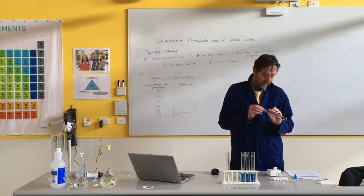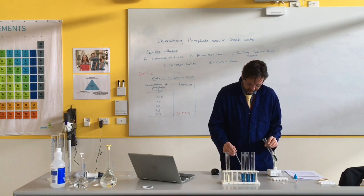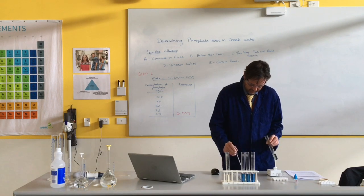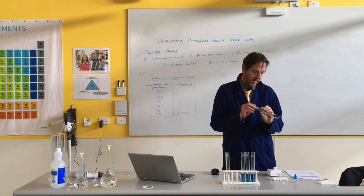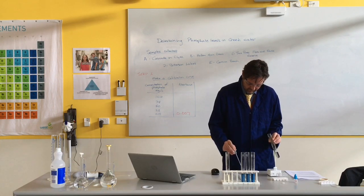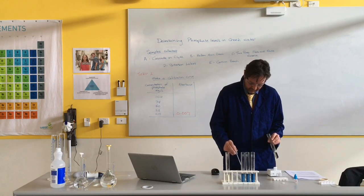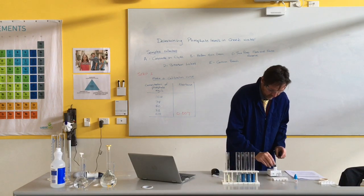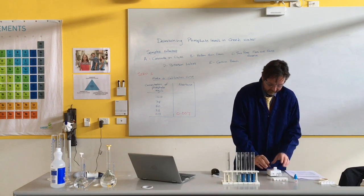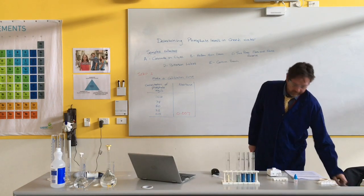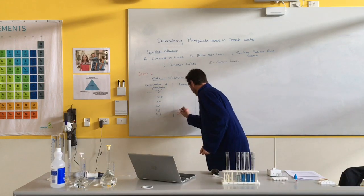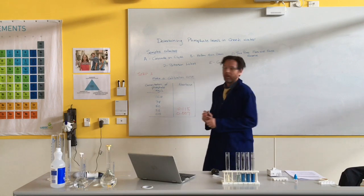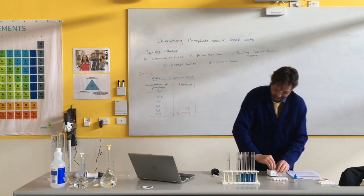Okay. Let's see what the colourimeter says this time. Pop it in. Click. Shut the lid. And we've got a different number this time. It's a bigger number, so that's a great sign. And it's 0.118. Okay.